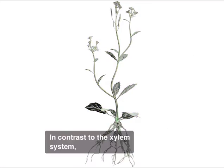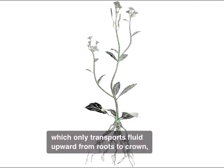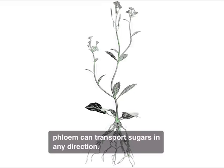In contrast to the xylem system, which only transports fluid upward from roots to crown, phloem can transport sugars in any direction.